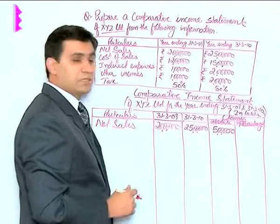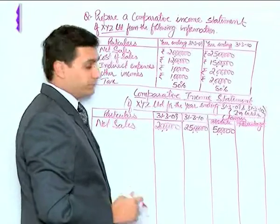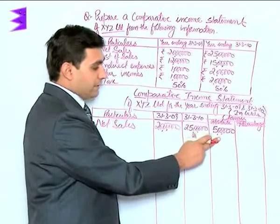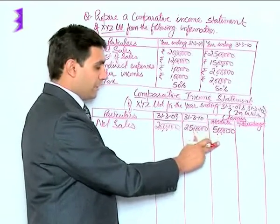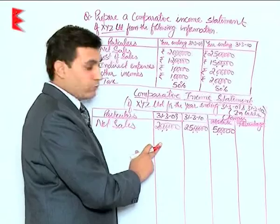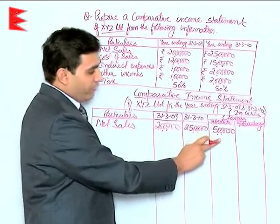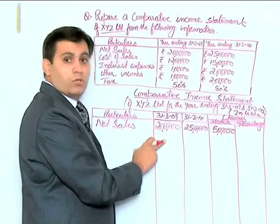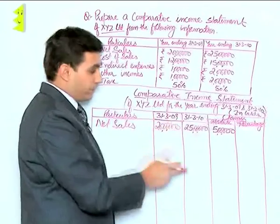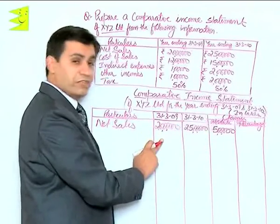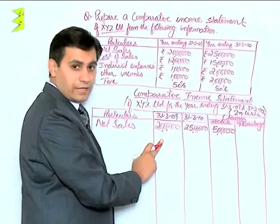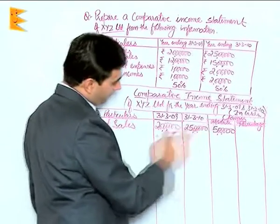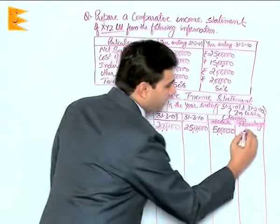To calculate percentage change, we divide the absolute change by the previous year figure. That would be 5 lakhs divided by 20 lakhs, multiplied by 100, which gives us 25 percent.